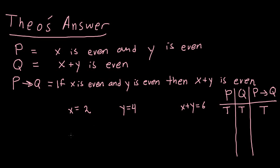Now let's check some spicier values. If X=3 and Y=5, then X plus Y = 8. P is false — 3 is odd and 5 is odd. However, X plus Y = 8, and 8 is even, so Q is true. And we know that false implies true, so P implies Q is true.